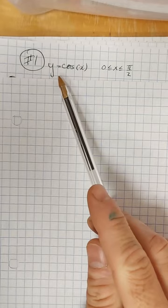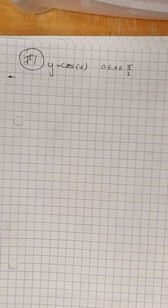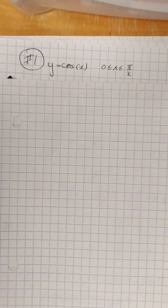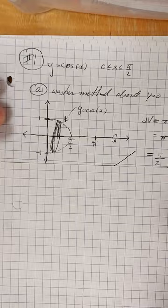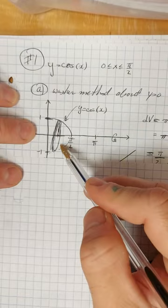The very first problem talks about the function y equals cosine of x on the interval from 0 to pi over 2 in the first quadrant. It's asking you to take that region bounded by the x-axis, the y-axis, and within that region, rotate it around the x-axis and use the method of washers to determine the volume generated by that rotation. I usually start with a picture — I think it's really helpful to graph that region. We're rotating this along y equals 0, or the x-axis line.